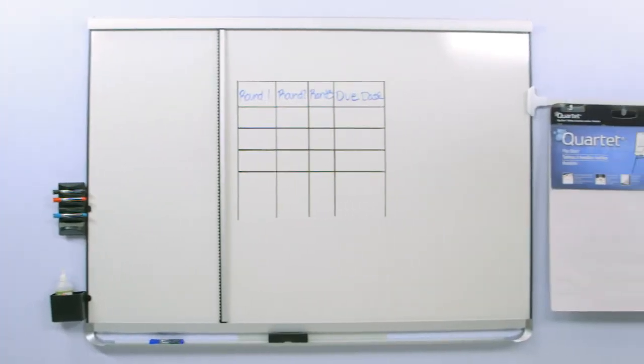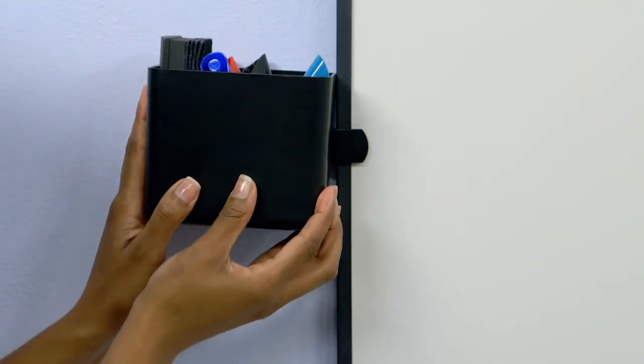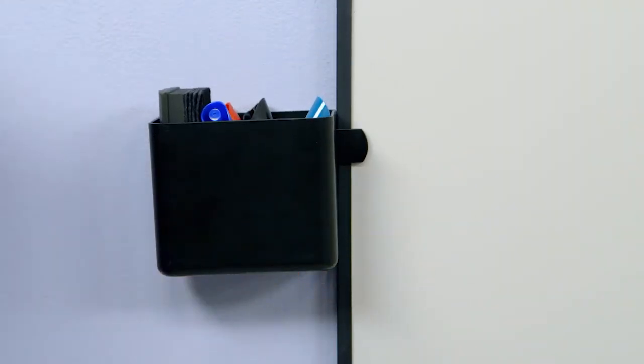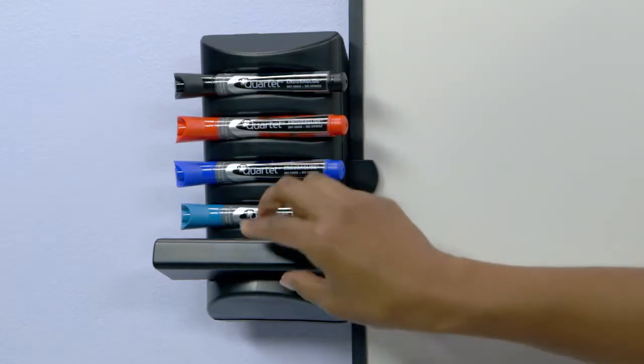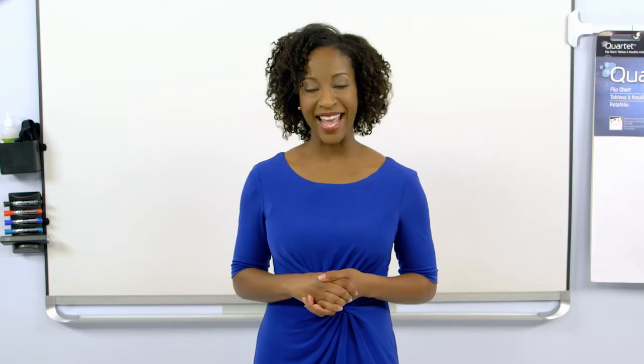It comes with a two-in-one eraser so you're ready to go from the start. Combine it with other Prestige 2 Connects accessories for a fully functional, convenient and collaborative workspace. Purchase the Connects Marker Caddy today.